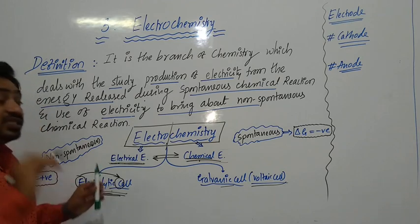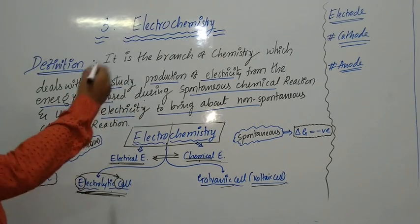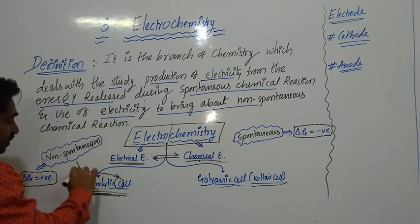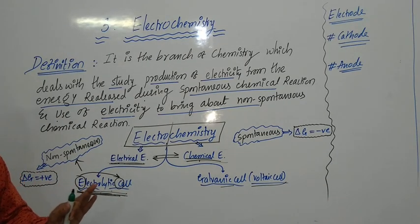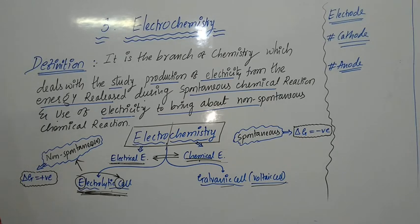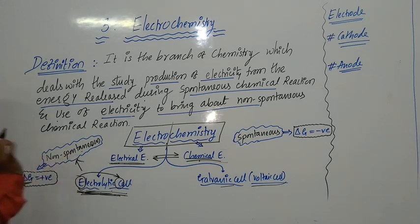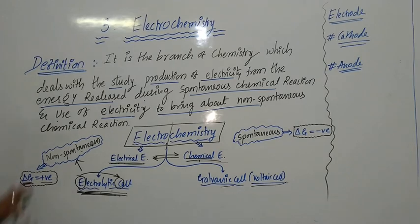In the electrolytic cell, the process taking place is called electrolysis. In the electrolytic cell, a non-spontaneous chemical reaction takes place. Non-spontaneous means the chemical reaction does not take place on its own, but it can be performed by utilizing some external energy like electrical energy. For a non-spontaneous chemical reaction, delta G is positive — delta G is greater than zero. Delta G means Gibbs free energy. For a non-spontaneous chemical reaction, delta G is positive or greater than zero.